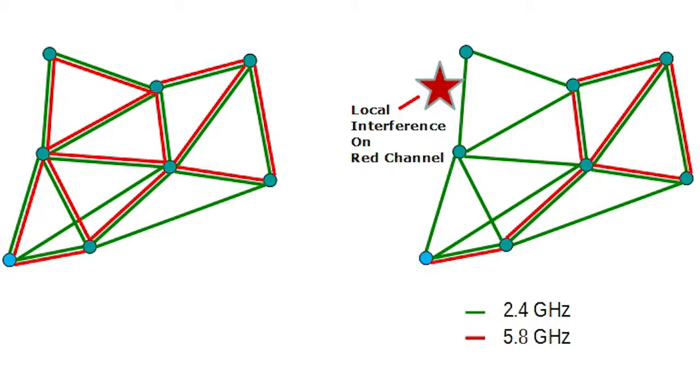But imagine a local interference source in one part of the network represented by the star on the right-hand side. If there's interference on the red channel in this example, then locally around that interference source, that channel may become unusable. But as you can see, there still is a usable frequency.